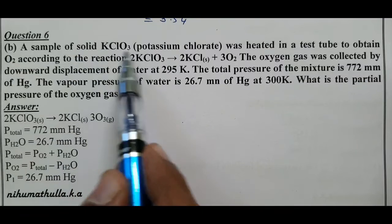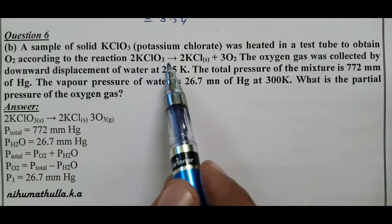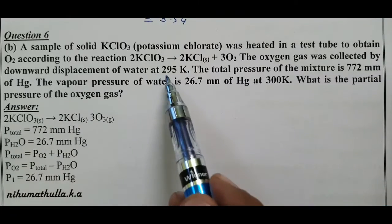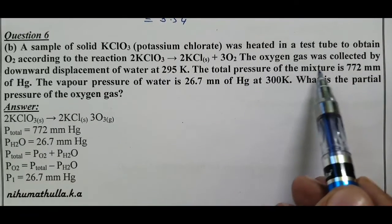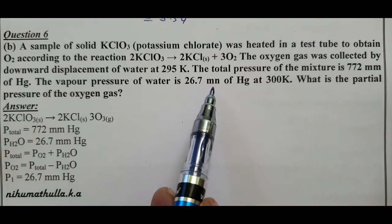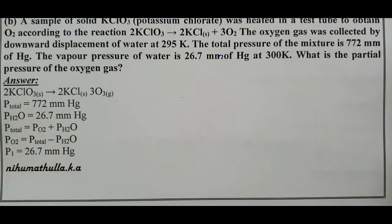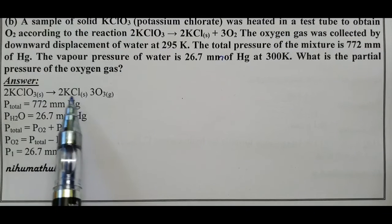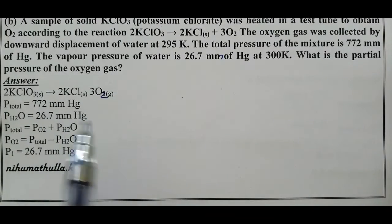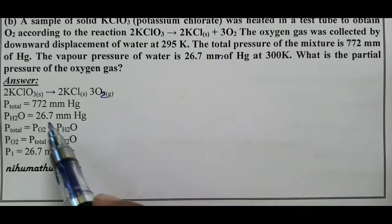Question 7: A sample of solid potassium chlorate was heated to obtain oxygen: KClO3 → KCl + O2. The oxygen gas was collected by downward displacement of water at 295 K. The total pressure of the mixture is 772 mmHg. The vapour pressure of water is 26.7 mmHg at 300 K. What is the partial pressure of the oxygen?